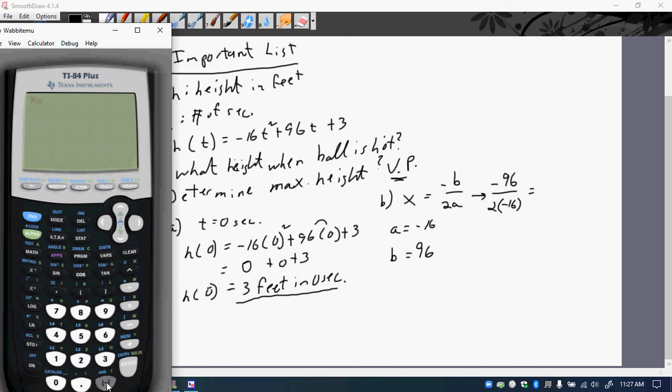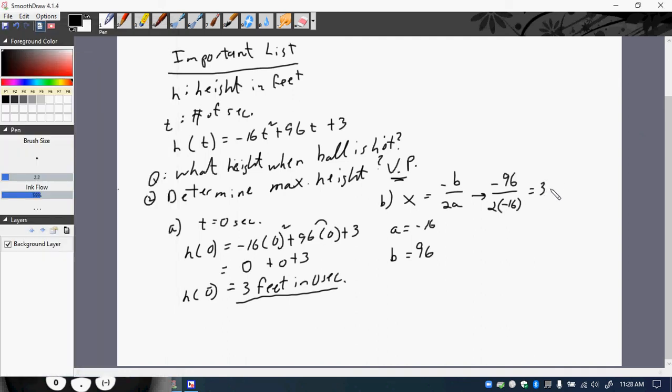And we go to negative 96 divided by, and I'm going to do the multiplying first underneath the denominator. So that's 2 times negative 16. Hit enter. I get 3 seconds. So I know this is 3 seconds.